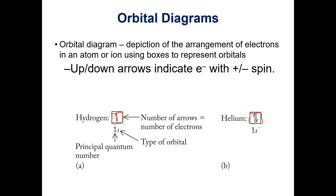For the 1s orbital, n equals 1 for both electrons, l equals 0 because it's an s orbital, and if l equals 0 the only possible value for m sub l is also 0. This means m sub s, the magnetic spin quantum number, has to be different — one must be +½ and one must be −½, giving them opposite spins. So we put one electron arrow pointing up and one pointing down.